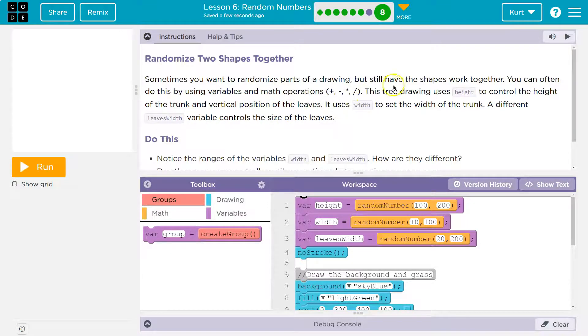Sometimes you want to randomize parts of a drawing but still have the shapes work together. You can often do this by using variables and math operators: plus, minus, multiply, divide.